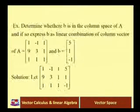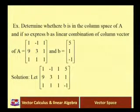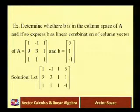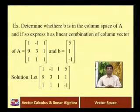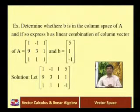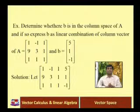Let us take one more example: determine whether b is in the column space of A, and if so express b as a linear combination of column vectors of A. Here A = [[1, minus 1, 1],[9, 3, 1],[1, 1, 1]] and b = (5, 1, minus 1). We directly write the augmented matrix: row 1 is 1, minus 1, 1, 5; row 2 is 9, 3, 1, 1; row 3 is 1, 1, 1, minus 1. We multiply first row by minus 9 and add to second row, and multiply first row by minus 1 and add to third row.